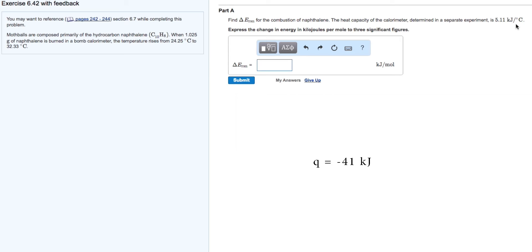The question asks for the answer in kilojoules per mole, so we need to convert grams of naphthalene to moles. There's 1.025 grams, and it's 128 grams per mole, so there are 0.008 moles of naphthalene.